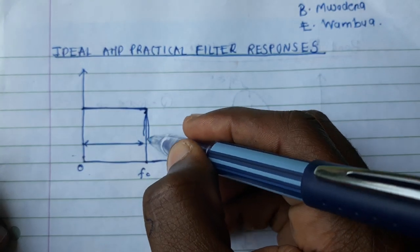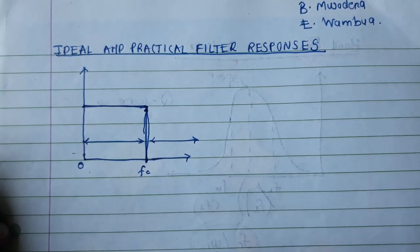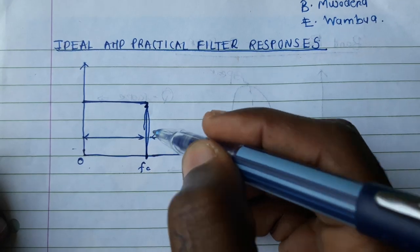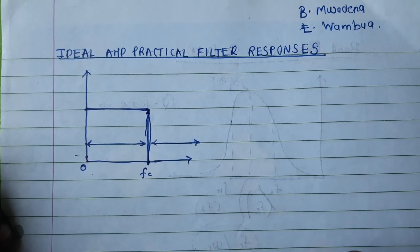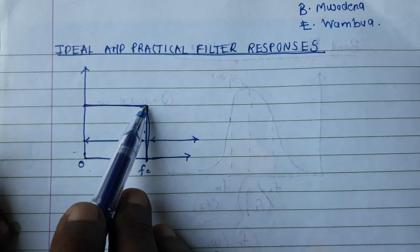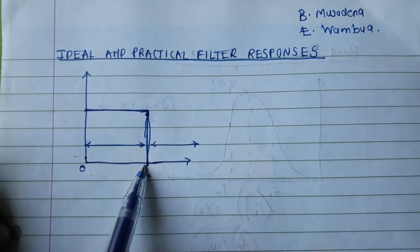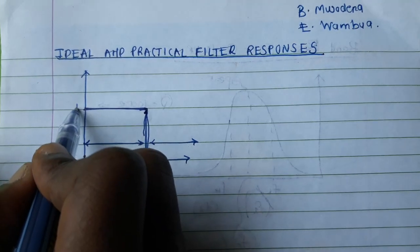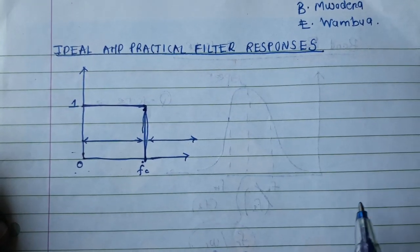As you can see, this is very steep. The roll-off is very, very fast. You can see the change from 1 to 0 is abrupt. The transition from 1 to 0 is very abrupt.